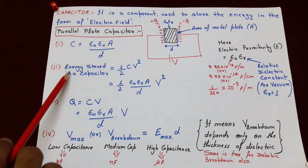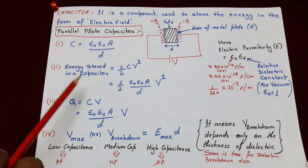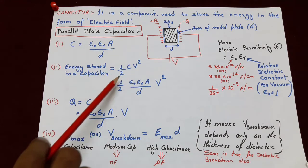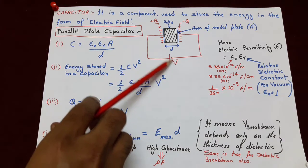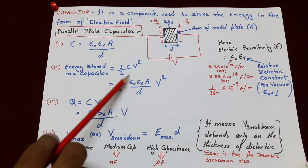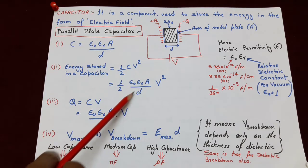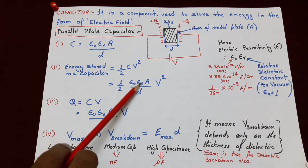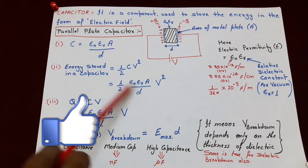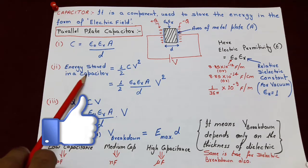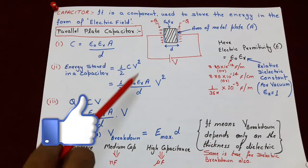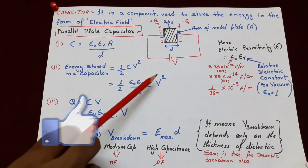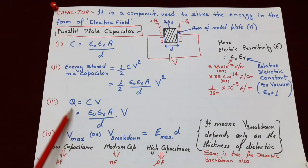Next, how much energy can be stored in a capacitor: energy is equal to half C V squared, where V is the voltage applied across the capacitor. We know C equals epsilon-naught epsilon-r A upon d, so from here we can conclude: agar hum permittivity ya dielectric constant epsilon-r ko 3 times ya 4 times kar den, to capacitor mein store hone wali energy bhi 3 times ya 4 times ho jayegi, provided other parameters are constant.